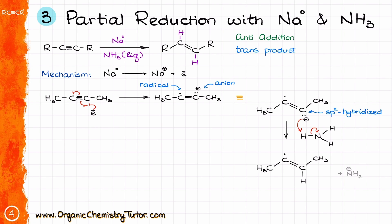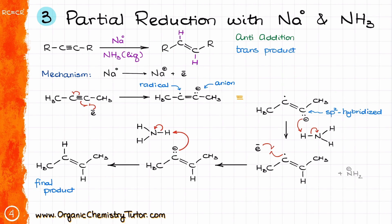Next, we do a proton transfer. Ammonia serves as the source of protons, and we make an amide anion as the conjugate base in this step. We still have the radical, so it grabs another electron from the solution, and that makes another anion, which grabs another proton from another ammonia molecule, giving us the final product — the trans alkene. And if your head isn't spinning after seeing this mechanism, you haven't been paying attention. We have everything here: full arrows, half arrows, radicals, anions, proton transfers, acid-base reactions — we have it all.